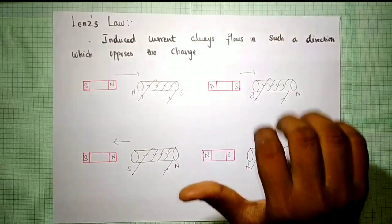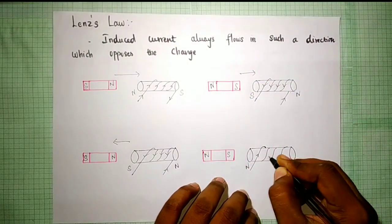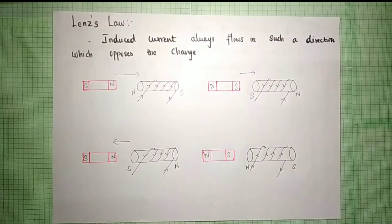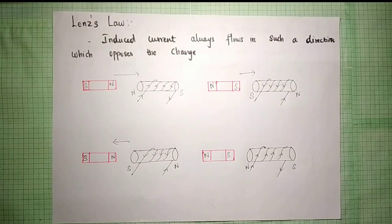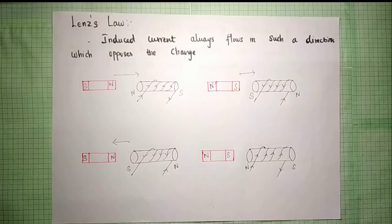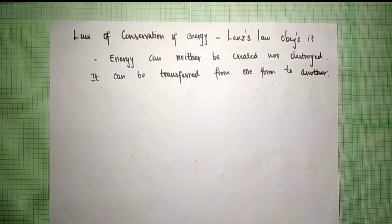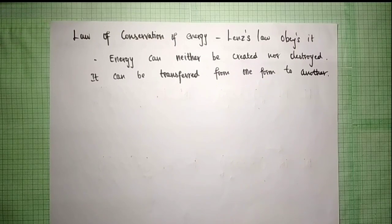The current is produced by the induced EMF. In Lenz's law, the law of conservation of energy is obeyed. Energy can neither be created nor destroyed; it can only be transferred from one form to another.